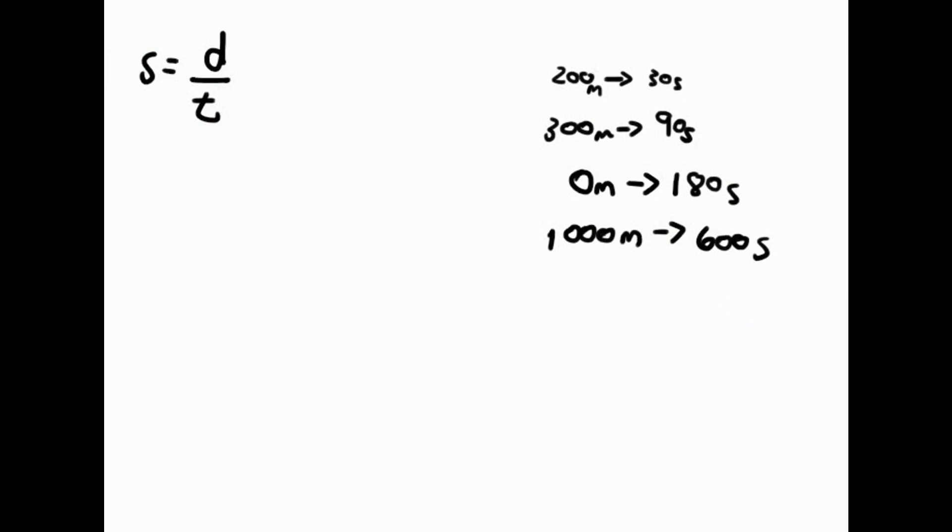Let's put that all into our formula. We have what we need. Total distance would be 200 meters, plus the 300 meters, plus the rest, 0 meters, plus 1,000 meters.